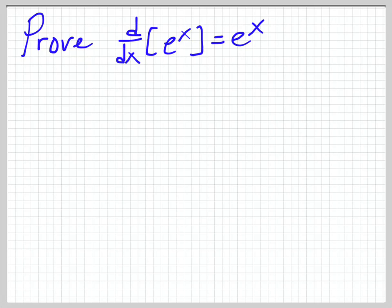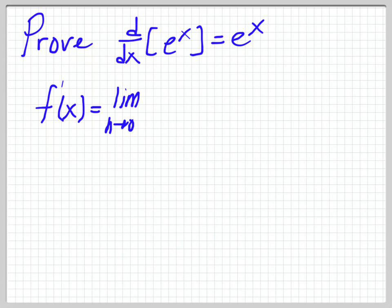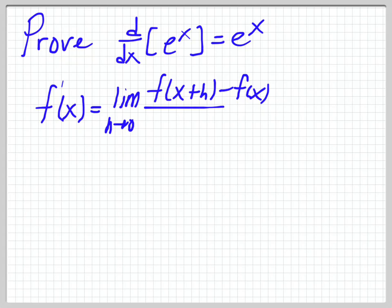Of course, you remember that the definition of derivative is f prime of x is equal to the limit as h goes to 0. Some people might use delta x or delta h — I just use h. It's easier for me to write, especially what I'm doing on the iPad here. That gives us f of x plus h minus f of x, all over h.